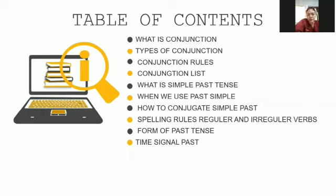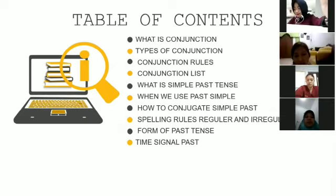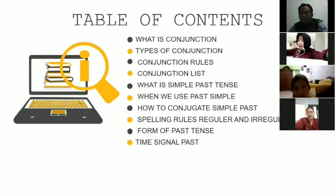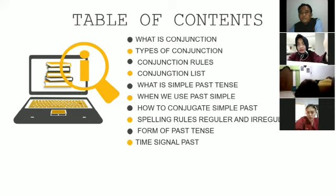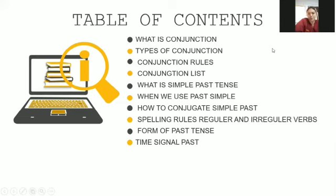Okay, the table of contents — the daftar isi — for our presentation material: what is conjunction, the definition of conjunction, types of conjunction, conjunction rules, conjunction list. Then, what is simple past, the definition of simple past, when we use simple past, how to conjugate simple past, spelling rules, regular and irregular forms of past tense, and finally time signals for past tense.